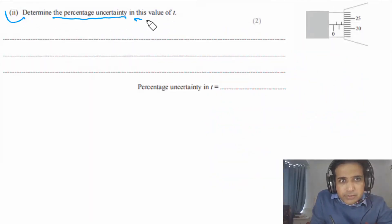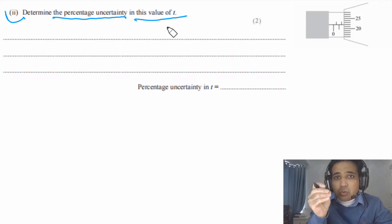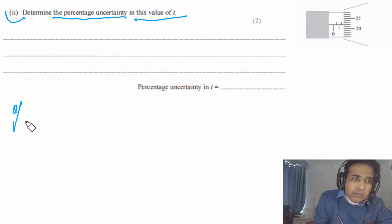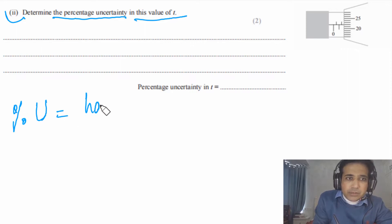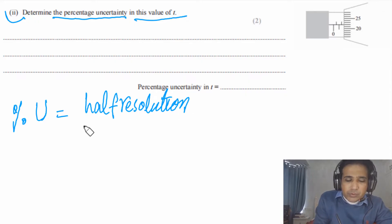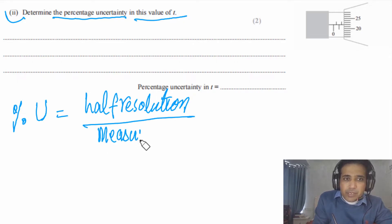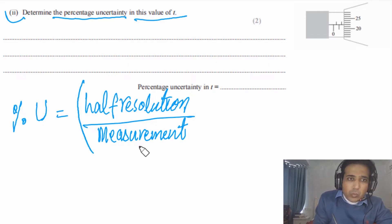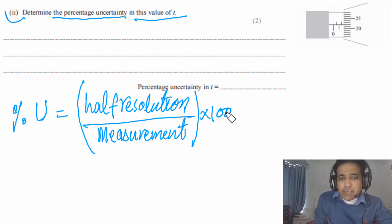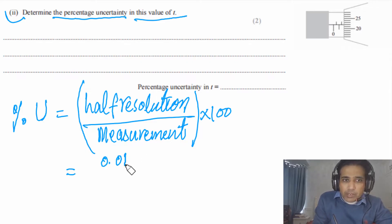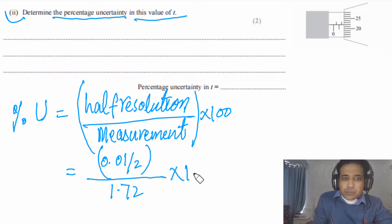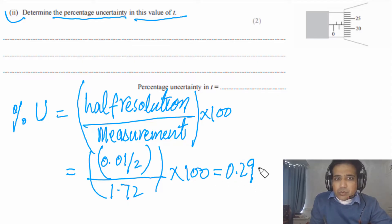The second part asks us to determine the percentage uncertainty in this value of t. Here we are talking about only one measurement. For a single measurement, percentage uncertainty equals half the resolution divided by the measurement, multiplied by 100. The least count of the micrometer is 0.01 mm, so half resolution is 0.005. Dividing by 1.72 and multiplying by 100 gives 0.29%.